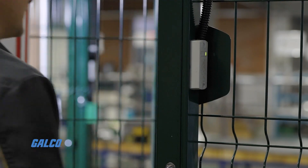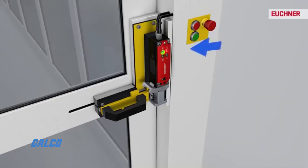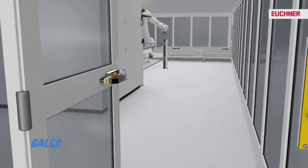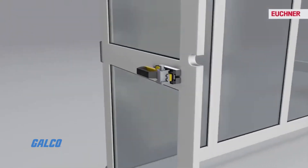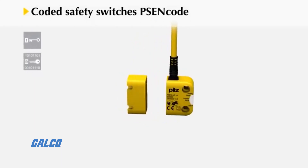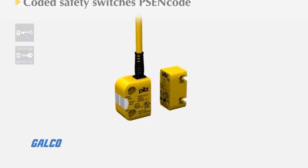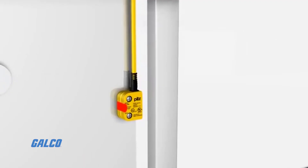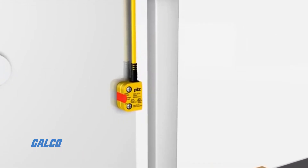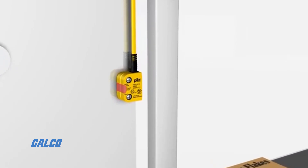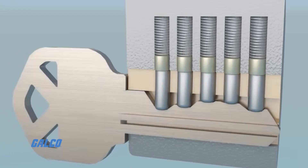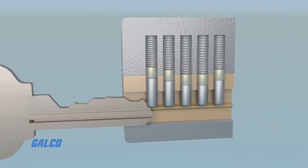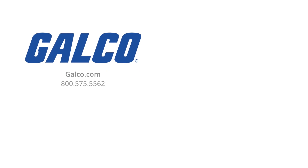This same idea can be applied to industrial electronics, in the sense that a component in a safety application can only be coded to operate in conjunction with another specific component. For example, coded safety switches are used to monitor positions of guards and for position mounting. Part of their safety monitoring is that there is only one single actuator that the sensor accepts, similar to how a lock only accepts one shape of key when opening.